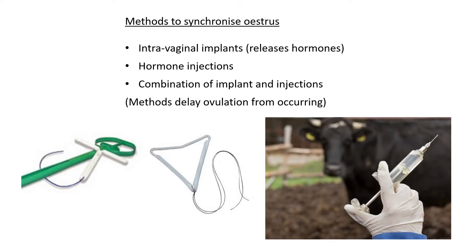The second method is hormone injections. Here at the side we have a large injection needle with some hormones — the cow can simply be injected with hormones that delay ovulation. Thirdly, a combination of the two can be used: both the implant and the injections. This seems excessive but is usually the safest bet, ensuring the cow has enough hormones in her body so ovulation will not happen. The choice depends on the farmer and the cow.